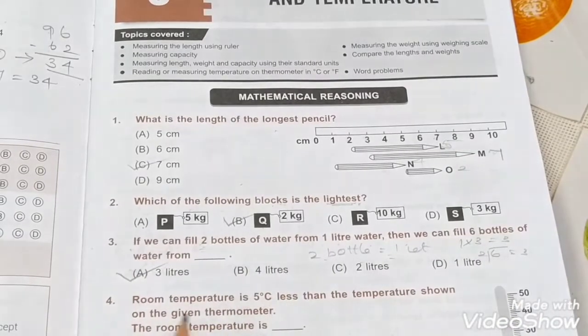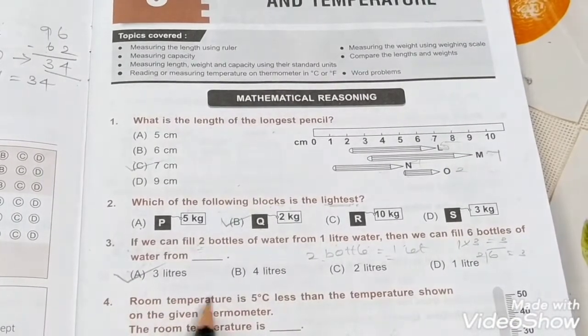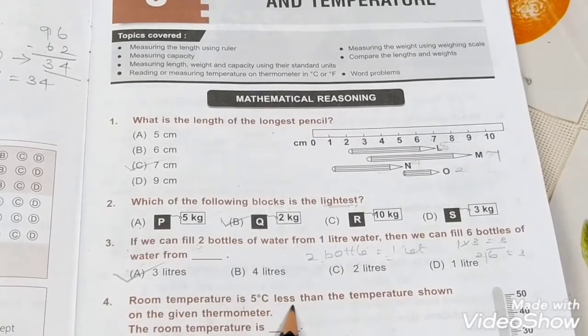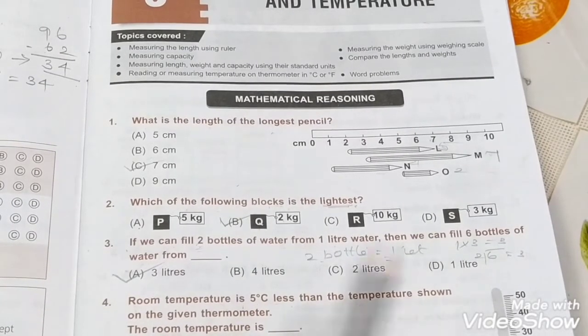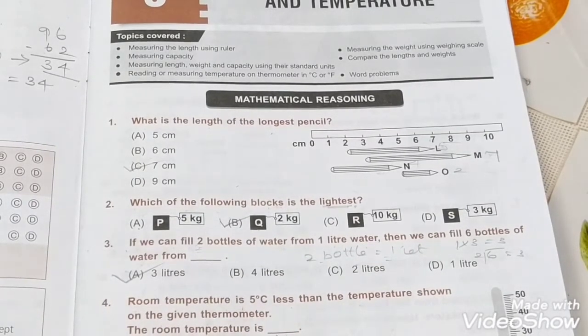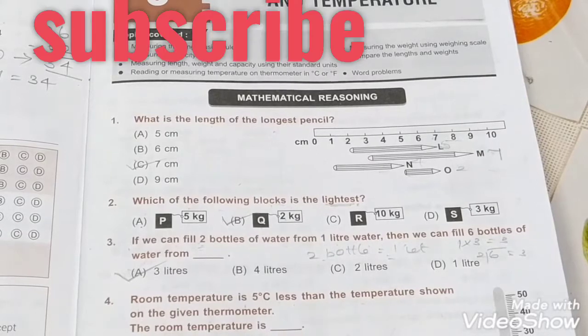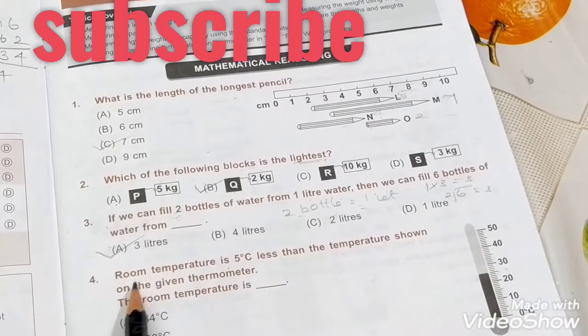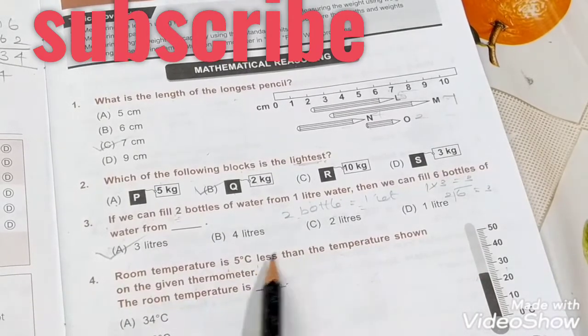Room temperature is five Celsius less than the temperature shown on the given thermometer. What is the room temperature? The thermometer shows 25 already. The room temperature is five less than that.